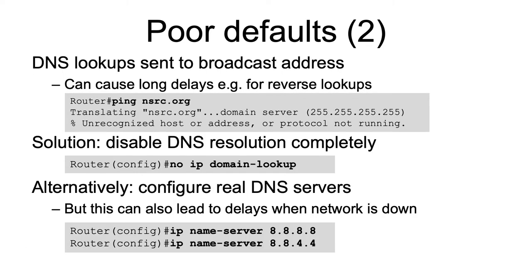The second Cisco default that we'll be talking about is that DNS lookups are sent to the broadcast address. This can cause long delays as it tries to look for reverse lookups. As you can see on the screen, when you try to ping nsrc.org on the router, you would see it would try to translate the address nsrc.org using the domain server 255.255.255.255. After some time, it will return the error 'unrecognized host' or address.